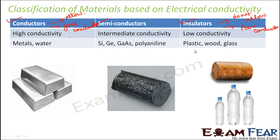If you take a material made of plastic and put it in direct contact with a live wire carrying current, you will not get an electric shock because plastic does not allow electricity to pass through it. But if you hold a piece of metal and put it in contact with a live wire, you will get an electric shock because metal allows electric current to pass through it. Semiconductors are intermediate between conductors and insulators — they have intermediate conductivity, partially allowing current to pass through them.